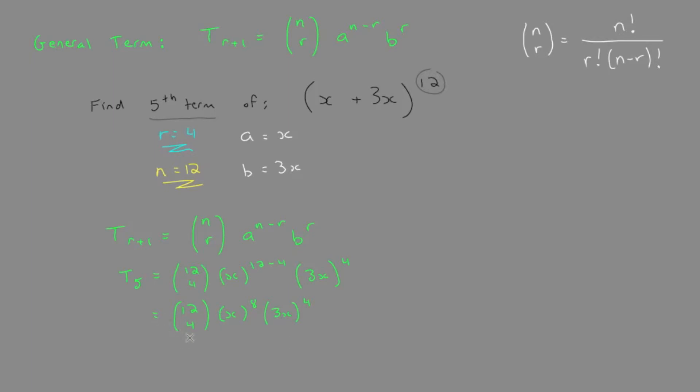We can solve for this now. We can simplify it. 12 choose 4. So we'll simplify everything in one step. 3 to the power of 4 is 81.